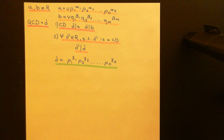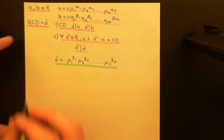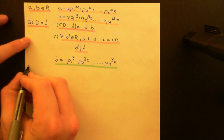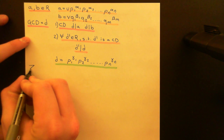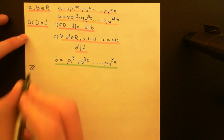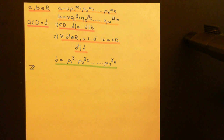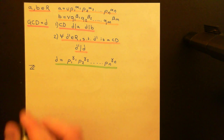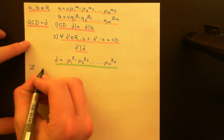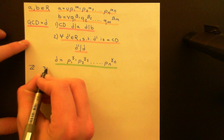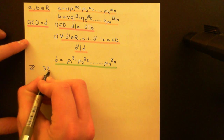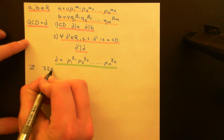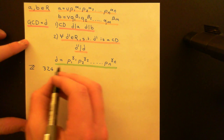So indeed this will be a greatest common divisor. That is how you find the greatest common divisor of two elements in a unique factorization domain: find the portion of the prime factorization that is common to both of them, take the biggest common portion you can possibly find, and that is your greatest common divisor. Let's do an example using the integers.